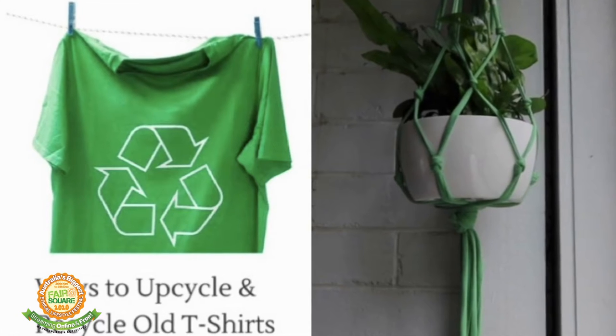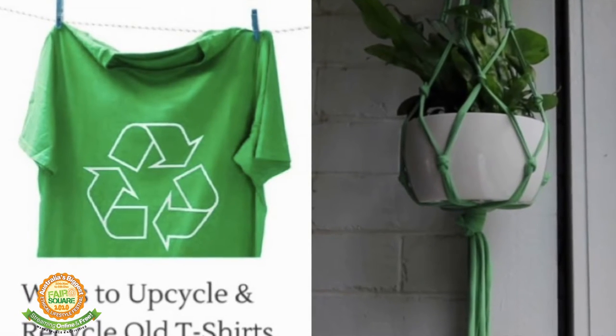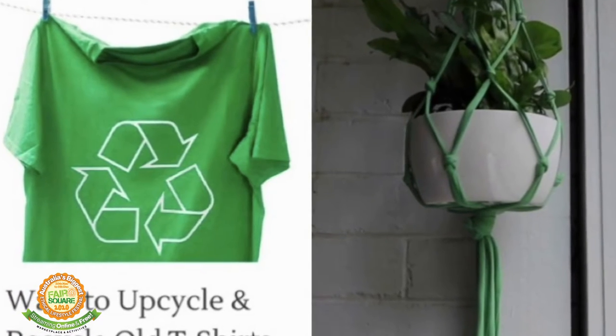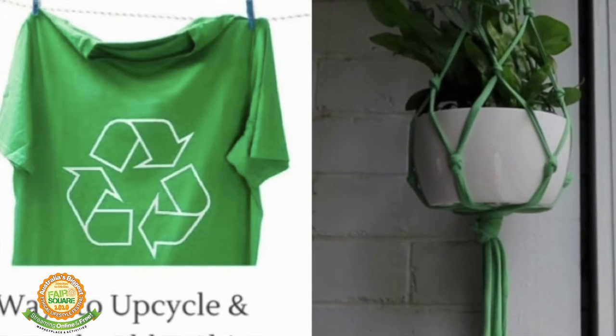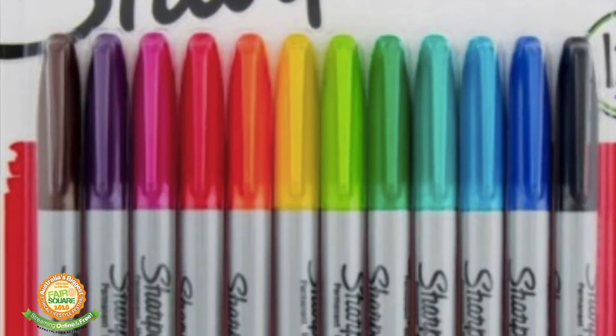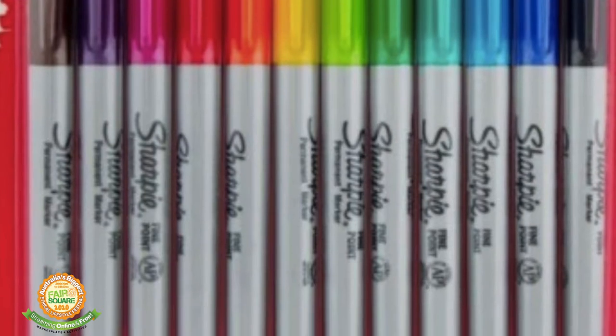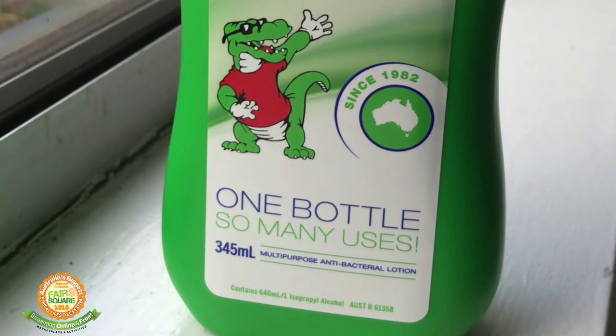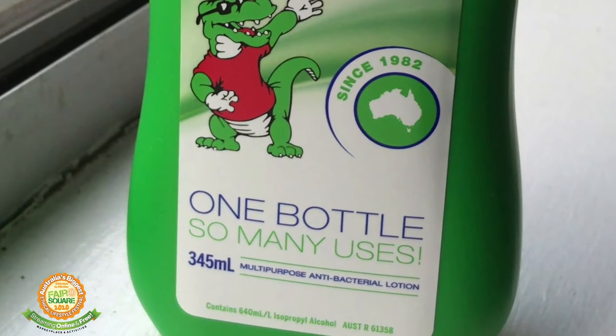Hi everyone, let's transform an old t-shirt into a hanging pot planter. If you want to color up your planter afterwards, you'll need some Sharpie markers and some rubbing alcohol. I use this isopropyl product.